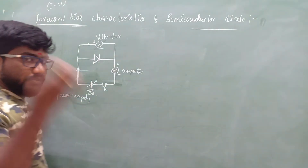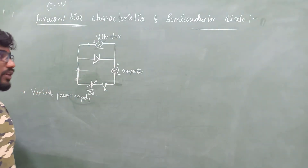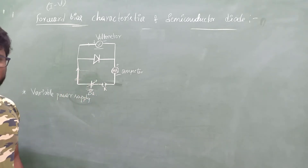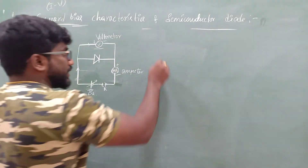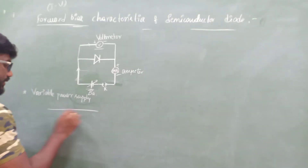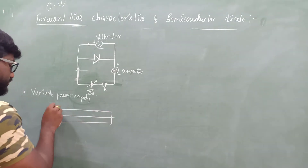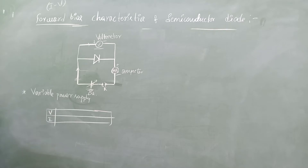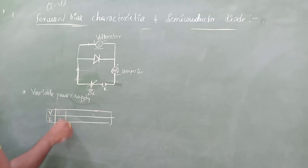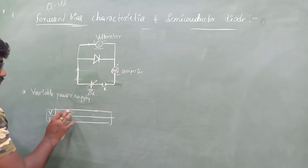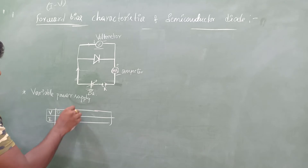Same as what we studied previously: the width of the depletion region goes on decreasing and it will start to conduct. Now let us take the values of voltage and current. In this example, V is in volts and I is in milliamperes. Initially when voltage is zero, current I is also zero. Next, when voltage is given as 0.1 volt, you will get some small value of current.